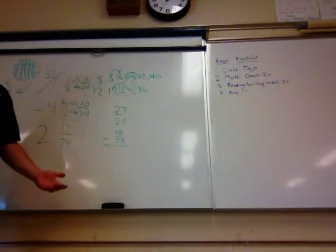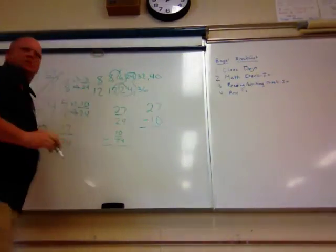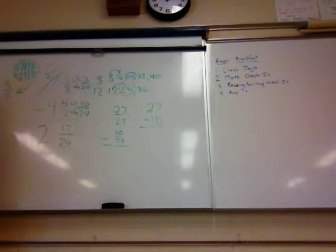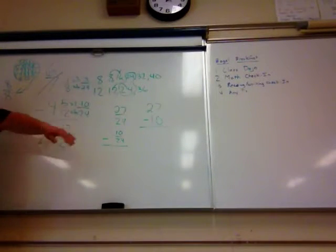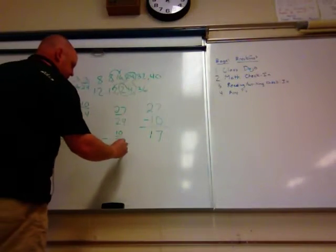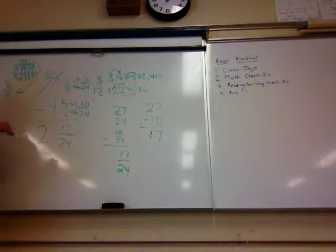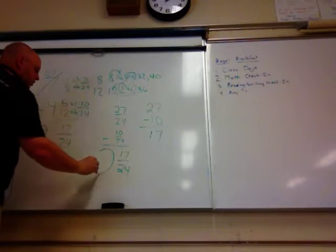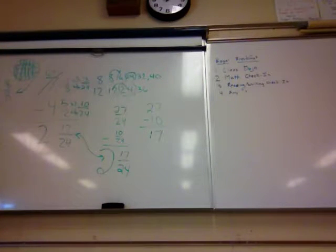Our denominators are the same, so we're just going to subtract our numerators. 27 — so what do we get when we subtract 27 minus 10, Chase? 17. And we keep our denominator the same — 24ths. And we subtract our whole numbers: 6 minus 4 is 2. That's interesting — do they look alike? Yes. Same answer. Two different ways to get there.